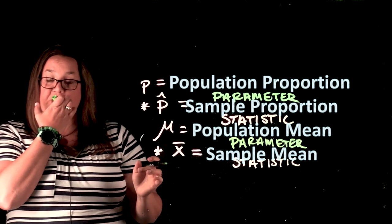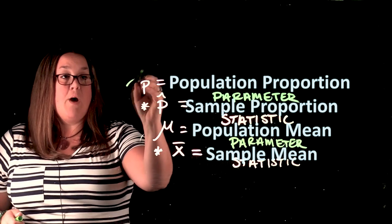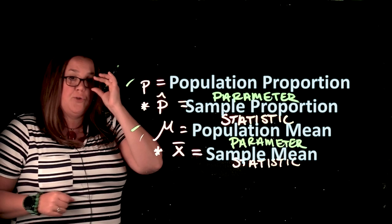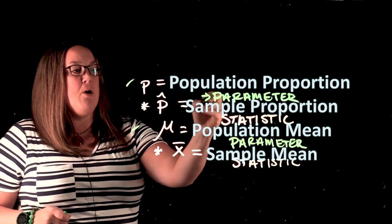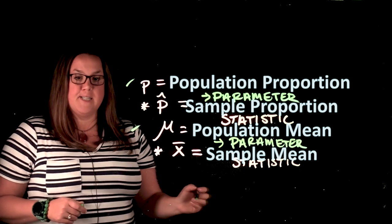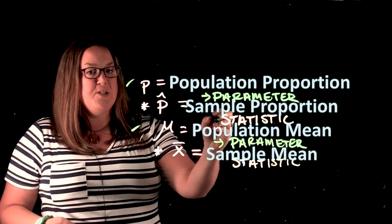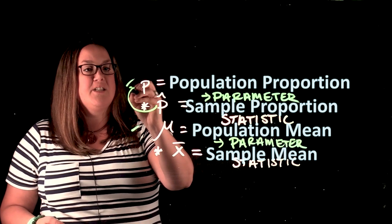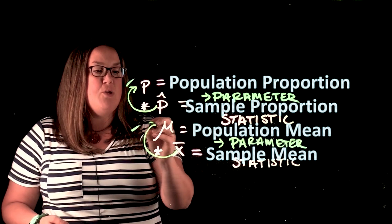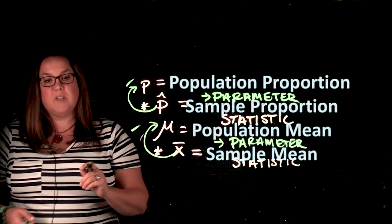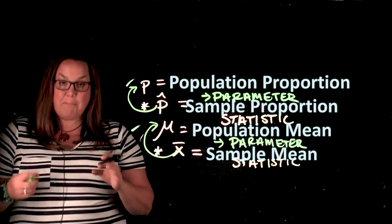So almost always, we won't know what p or what mu is equal to. So when we define a parameter, we're going to be defining these in a sentence or what we want to make an inference on. And we'll be using our statistics to be able to estimate those values. So we're going to be using x bar to try to estimate mu. And we'll be using p hat to try to estimate p.